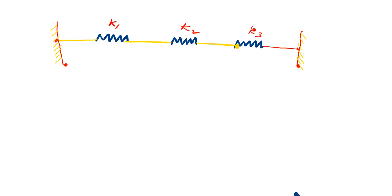Now represent the nodes. Here node 1, node 2, node 3, and at the end node 4. So there are four nodes and three stiffness values. We will write the values of K1, K2, and K3.